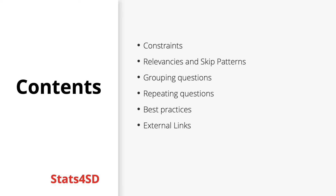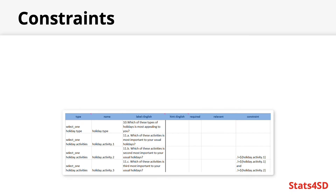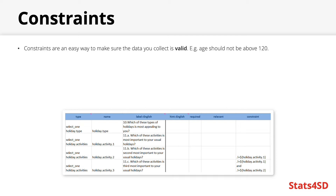Form logic can be a little bit more complicated than question types, but it is extremely useful that you familiarise yourself with how it works. Let's start by adding constraints to your form — they're an easy way to make sure that the data you collect is as valid as possible. For instance, you may ask a respondent for their age and set a constraint that the inputted value should not be above 120, as this is a highly unlikely value or may be outside your target audience. Essentially, they limit what constitutes an acceptable answer.